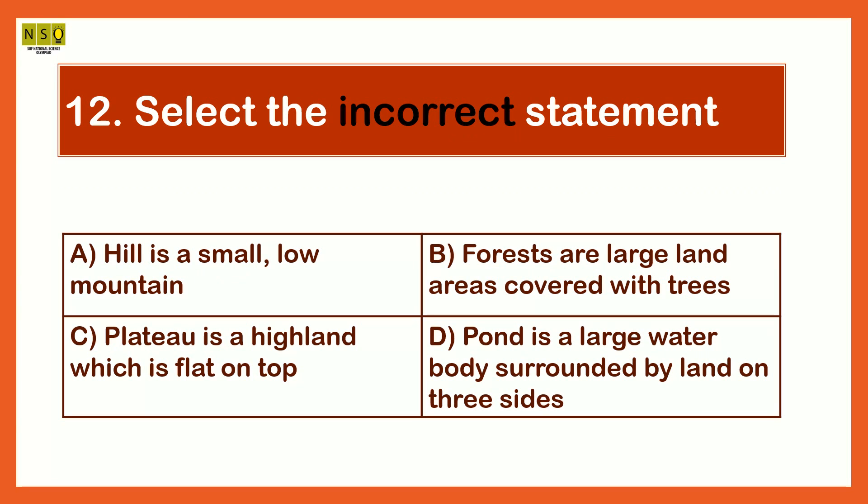Select the incorrect statement. The options are: Option A, Hill is a small low mountain. Option B, Forests are large land areas covered with trees. Option C, Plateau is a high land which is flat on top. Option D, Pond is a large water body surrounded by land on three sides.